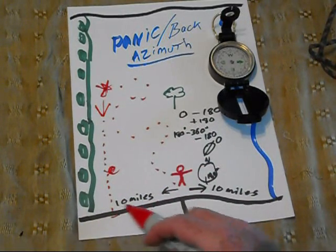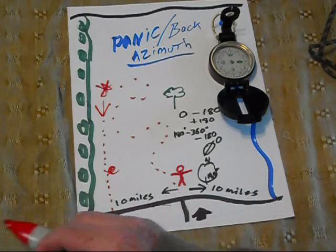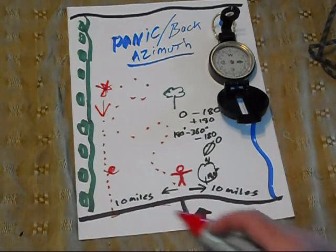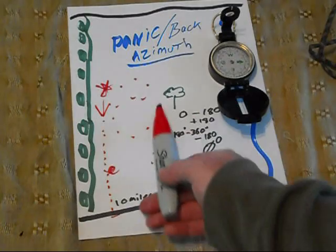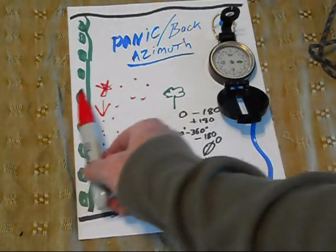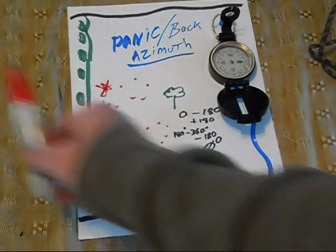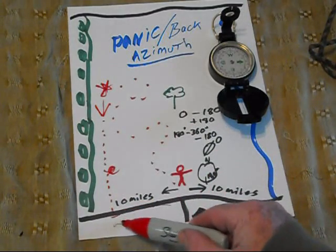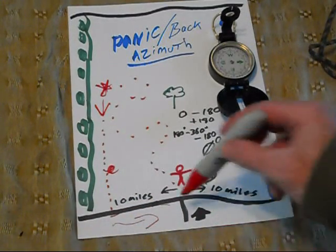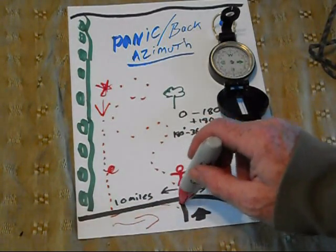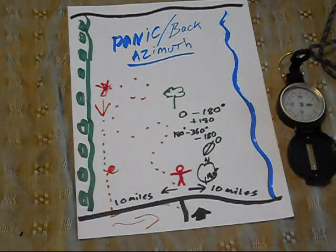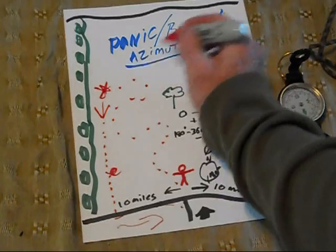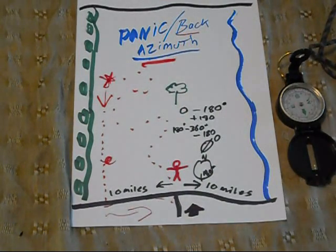I already know that road runs for over 10 miles to the west of my house and 10 miles to the east. So all I have to do is remember which way I was walking — east or west — walk that way, and get to my house. That's the back azimuth.